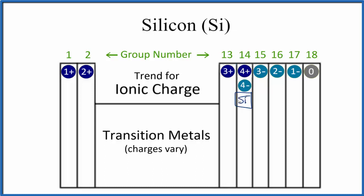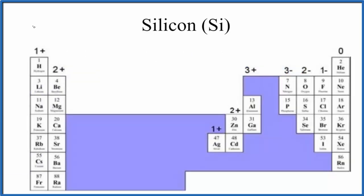However, Si normally forms covalent bonds, so it doesn't really make sense to talk about ionic charge with silicon. If we look at the periodic table in a little more detail, elements like Si, carbon, or boron mainly form covalent compounds, so we don't talk about ionic charge for these elements.